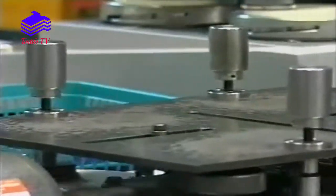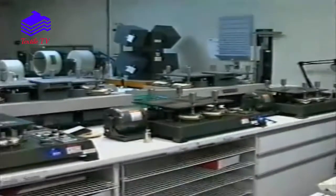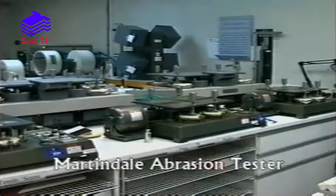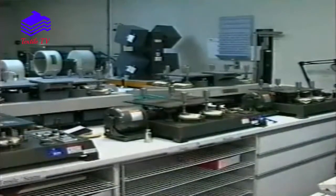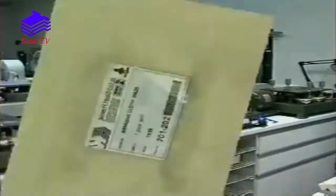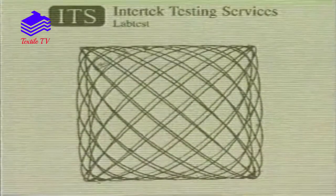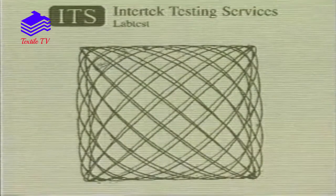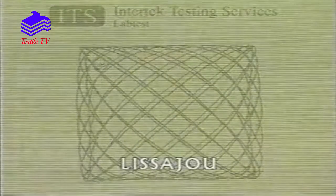The abrasion resistance of textile materials is determined by testing on the Martindale abrasion tester. The material under test is abraded against a standard reference fabric, usually a woven wool fabric, in a multi-directional rubbing action referred to as a lissadu movement.